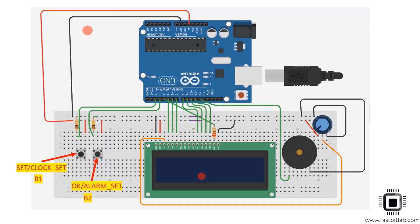The circuit diagram of this project is pretty much similar to the previous one. There will be two buttons on the button pad. The first button is B1, which is a multi-functional button that can be used for set and clock set functionalities — to execute set functionality or to enter into clock setting mode.